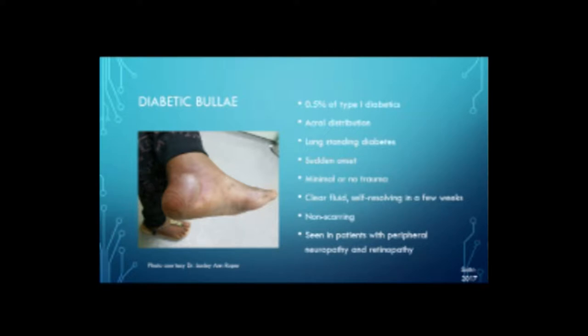Diabetic bullae are blisters which occur on the hands and feet usually, occurring in 0.5% of type 1 diabetics, usually in long-standing diabetics. The onset is sudden with usually minimal or no trauma. Clear fluid is usually found in these lesions, and they usually resolve by themselves in a few weeks. They're non-scarring and are also seen in patients with peripheral neuropathy and retinopathy.